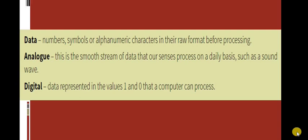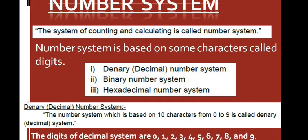Humans use analog data. For example, sound, light, and impulses on our skin. Humans usually see and hear continuous data — that is technically analog data to our senses. Analog data is great for humans to process and understand, but computers cannot understand analog data. They can understand only digital data, which is in the form of zeros and ones.